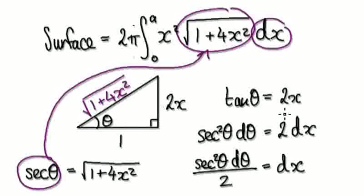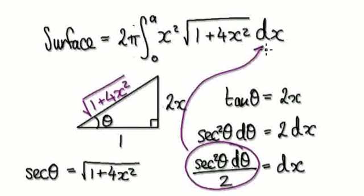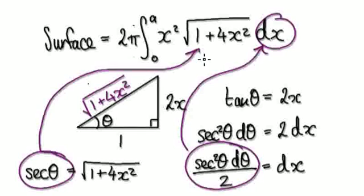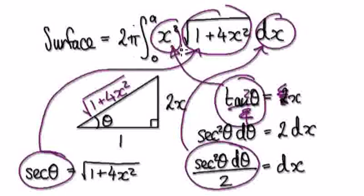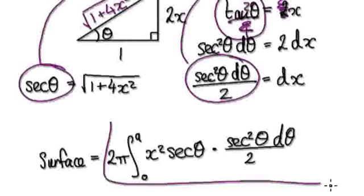Once you've differentiated, that gives you dx in terms of dθ, which you can substitute in for dx. For x squared, divide both sides of tan θ = 2x by 2 to get x = tan θ / 2, then square both sides to get x squared equals tan squared θ over 4. So you can substitute tan squared θ over 4 in for x squared. The whole expression then becomes this new form, and I will continue in the next video.